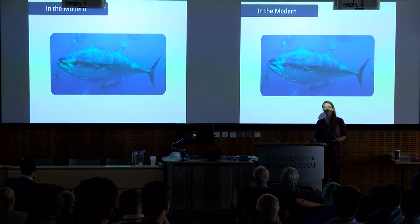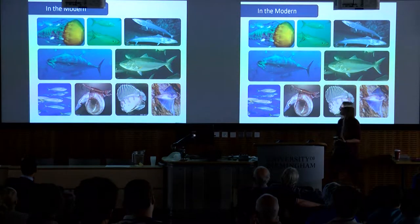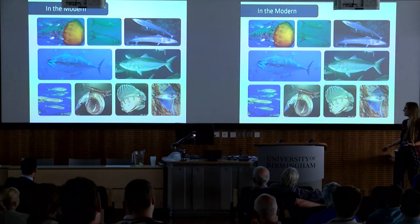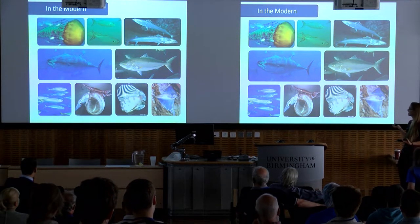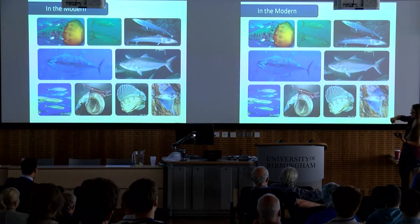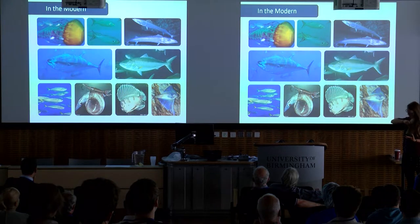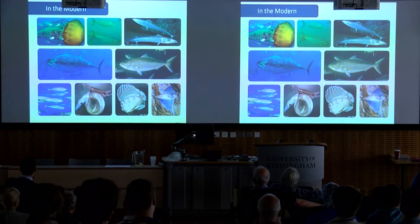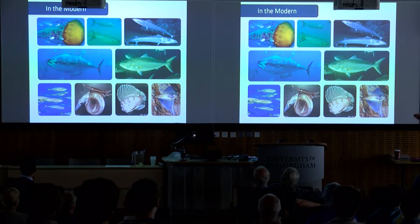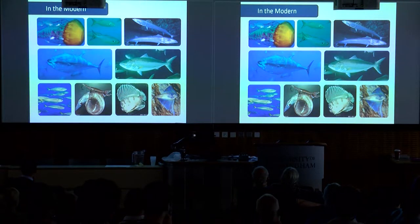Recent molecular studies have discovered that tunas are actually related to a really wide range of other fish that are very morphologically disparate. They look very different to one another — you have some really deep-bodied forms like Caristeids and Brahmids, and you also have these really weird deep-sea swallowers. This one has swallowed a trichiurid, which is also part of this group. So they're found in a really wide range of ecological niches.